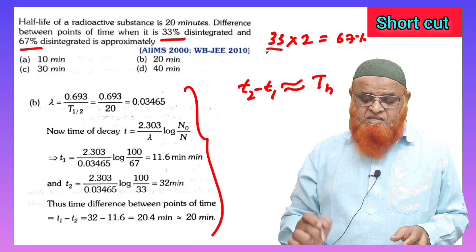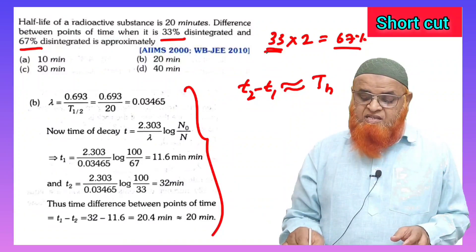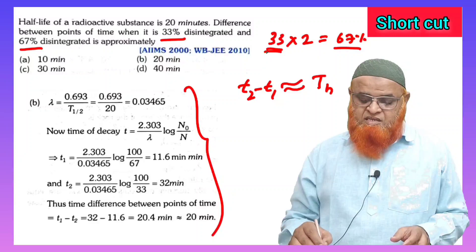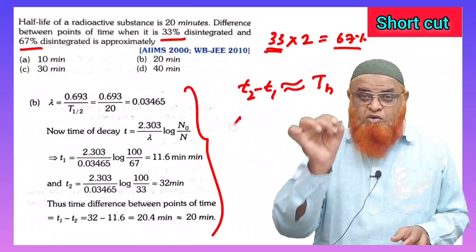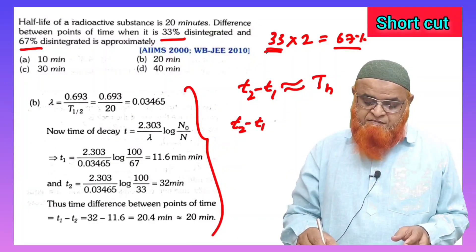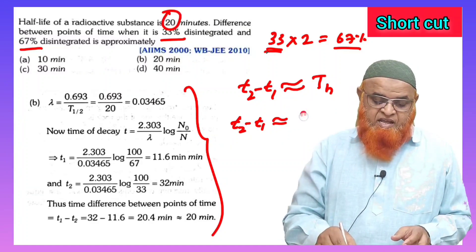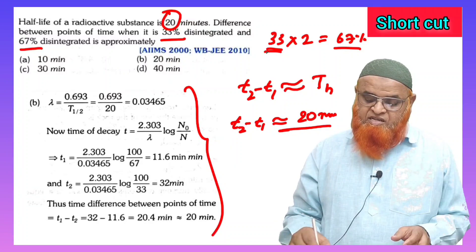the shortcut is: when percentage of one is double that of the other, then the time interval is equal to half-life period. So directly you can write t2 minus t1 is approximately equal to th, and th is given as 20 minutes, so directly you can write 20 minutes